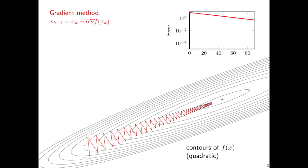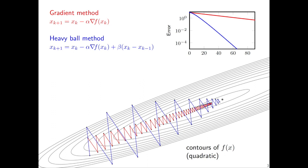People have come up with ways to accelerate convergence using only gradient information. One example is the heavy ball method: you start with what looks like a gradient step, but then add an additional step that depends on which direction your previous step was in. So XK+1 depends on XK and XK−1, requiring a little extra memory and an extra parameter beta. If you choose alpha and beta appropriately — which are not the same as the best alpha for gradient descent — you will get faster convergence and effectively larger steps.